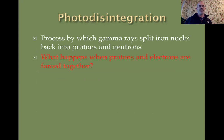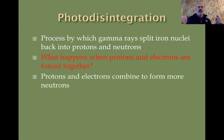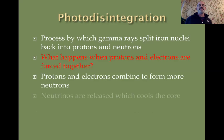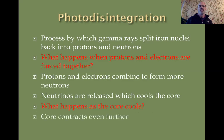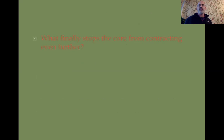When protons and electrons are forced together, they form a neutron plus a neutrino. That neutrino carries some energy away, cooling the core, which then contracts even further. Remember, all of this is happening in about a second — it's not occurring in stages.